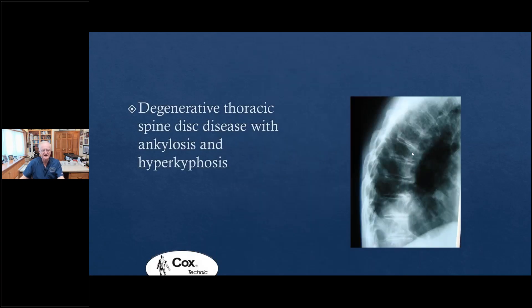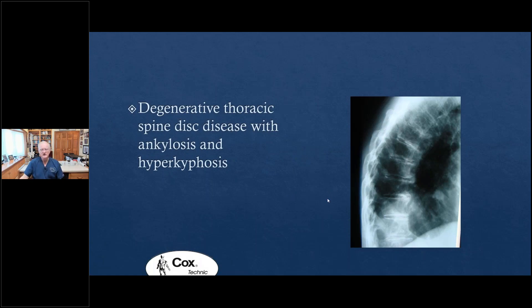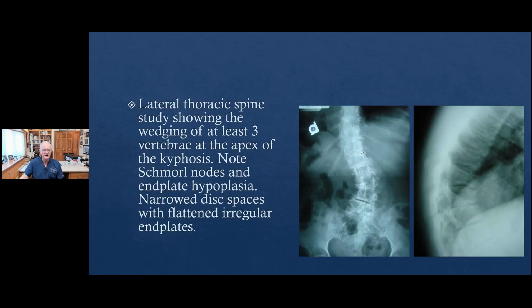We look at degenerative thoracic disease with ankylosis and hyperkyphosis. These patients can be quite difficult; a PA thrust may well cause pain. Instead, we will use long Y-axis distraction. We will begin with manual tolerance testing, manual distraction, then go to automated attended long Y-axis traction and unattended automated long Y-axis traction. And what about degenerative scoliosis and hyperkyphosis — compression defects at levels with greater than 25-degree thoracic spine gibbous flexion deformity? These patients are not going to tolerate violent thrust manipulation.